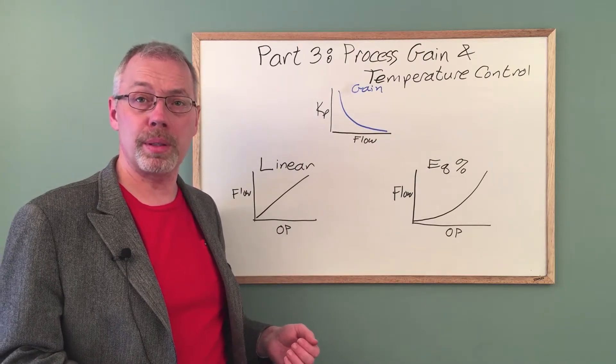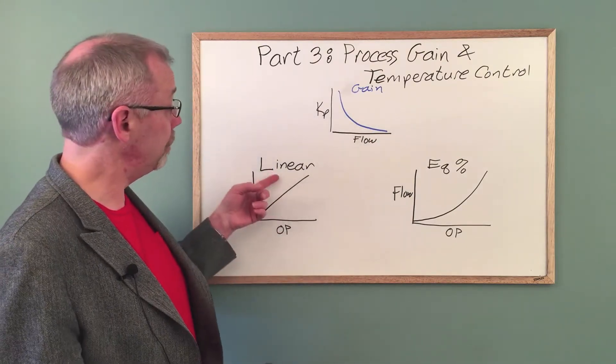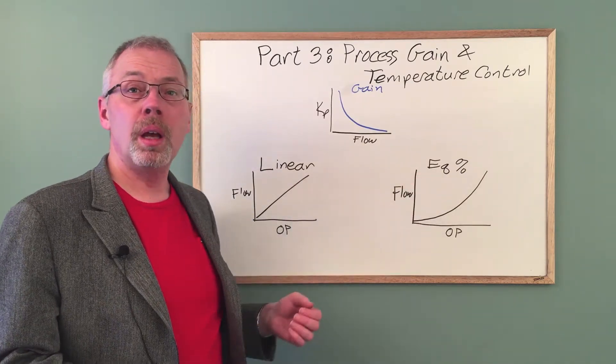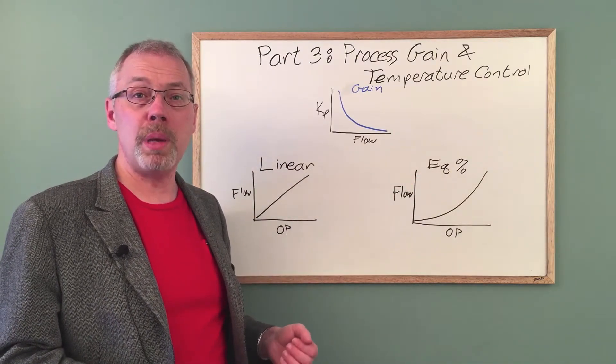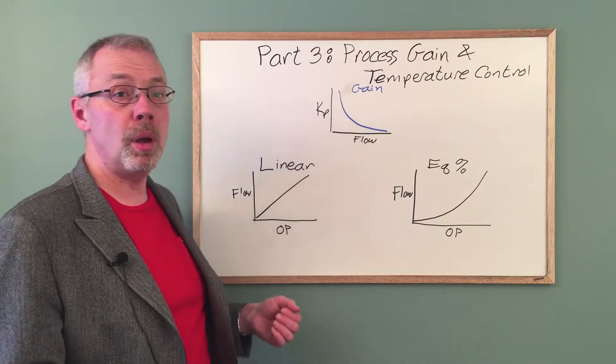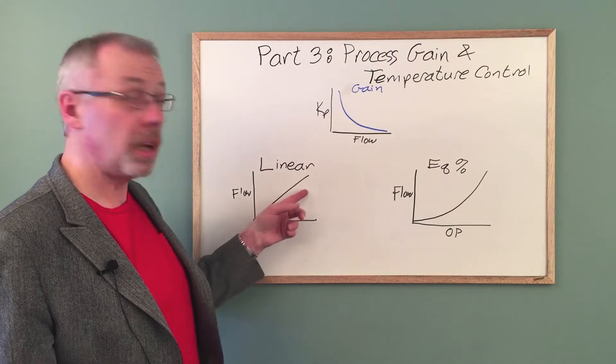There are two common control valve characteristics, a linear valve and an equal percent valve. A linear valve produces the same increase in flow rate for an additional 1% valve opening over the entire range of valve positions.